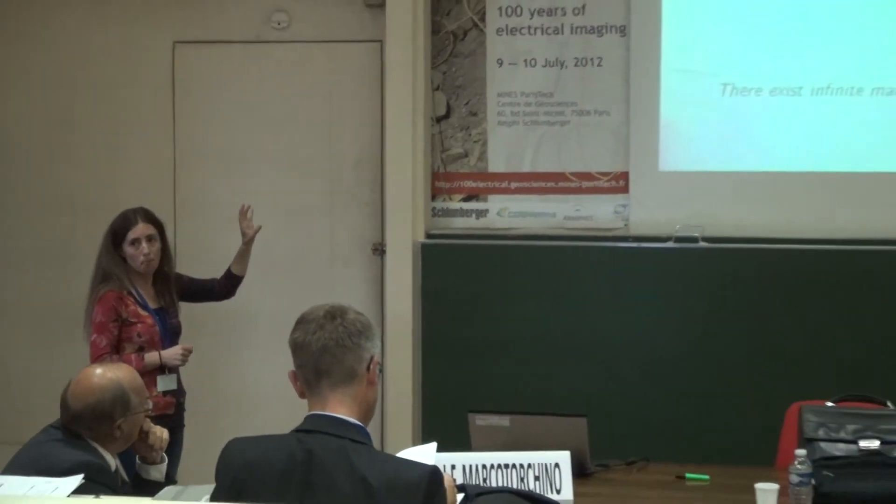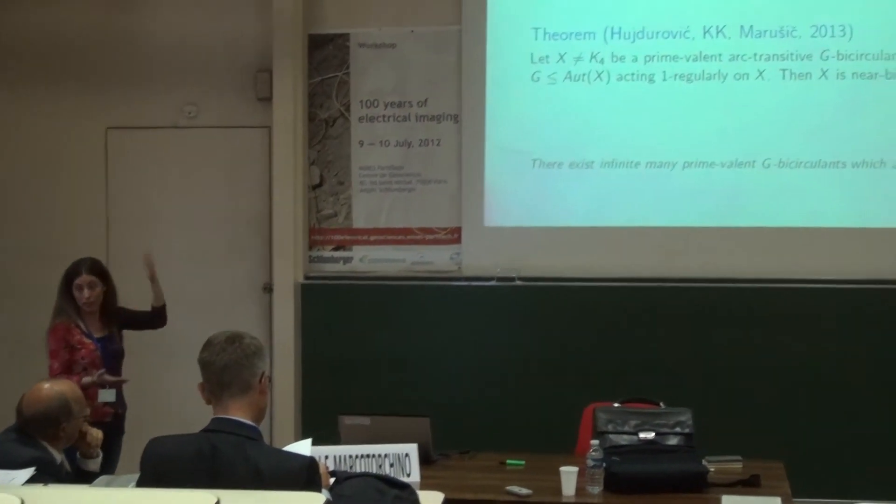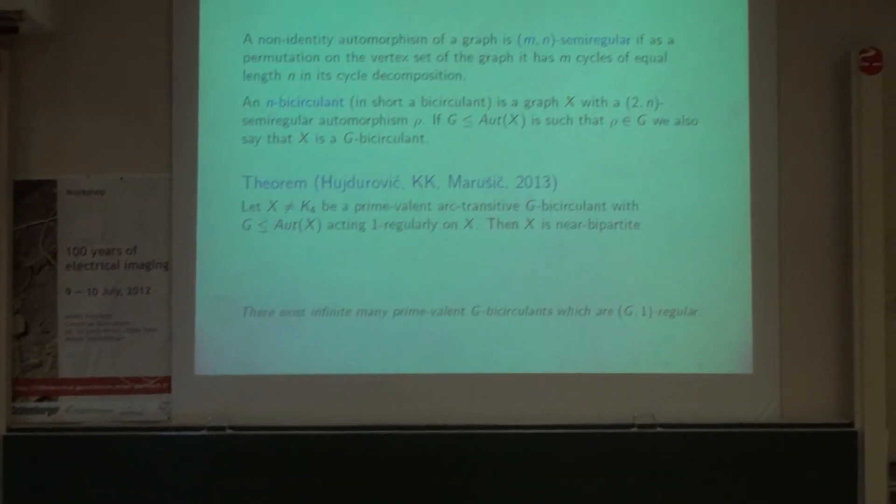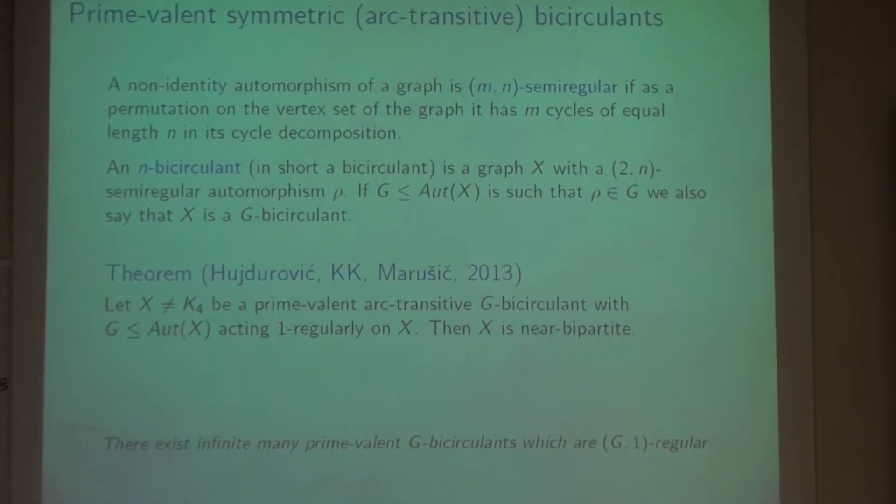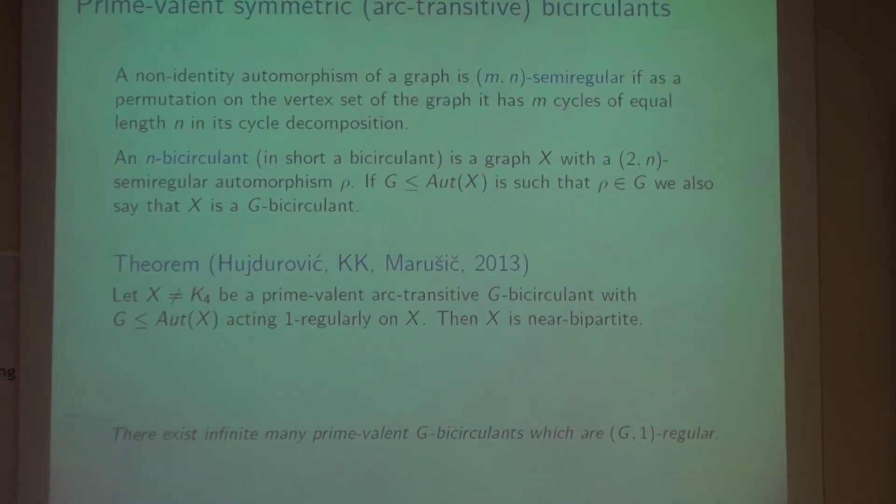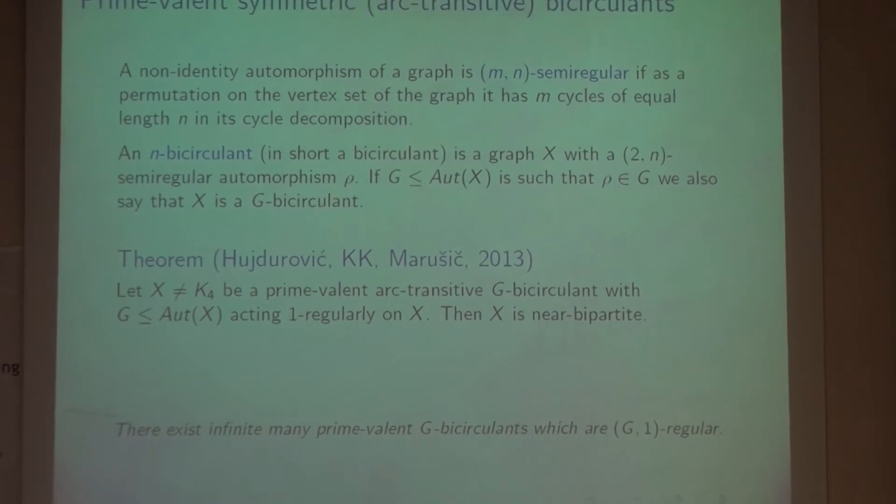And we considered these bicirculants which are prime valent, arc transitive, and one regular on the graph. Why these restrictions? These restrictions because only such graphs can occur as the quotient graphs of a Cayley graph. And we proved that all such graphs are bipartite. And there are infinitely many such graphs.